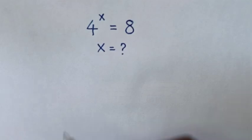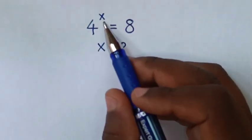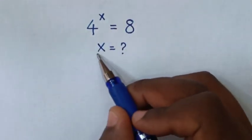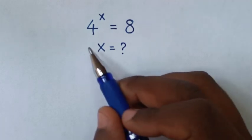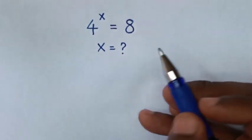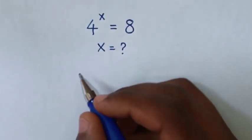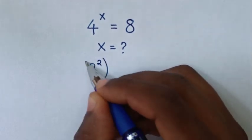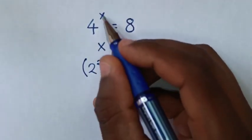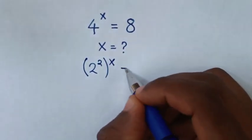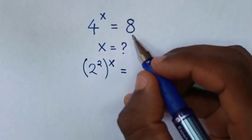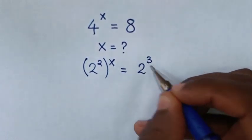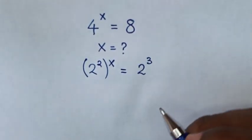Hello. How to solve 4 power x is equal to 8, to find the value of x. First, from this equation, 4 is the same as 2 power 2, then bracket power x is equal to 8, which is the same as 2 power 3.